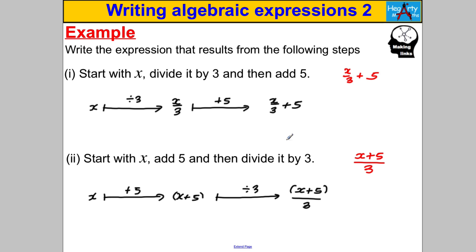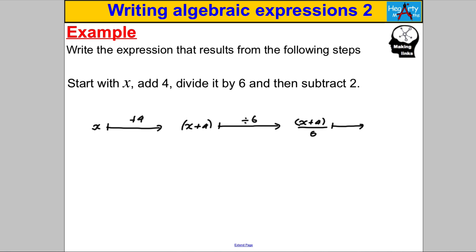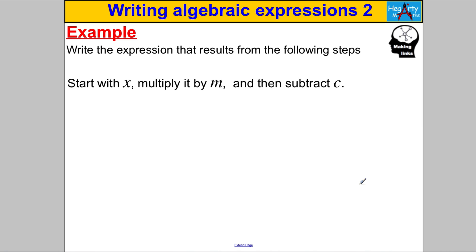Let's try another. Start with X, add 4, divide by 6, then subtract 2. Start with X, add 4 — put a bracket around it to keep that together — divide that whole thing by 6, giving X add 4 in brackets over 6. Then subtract 2, so the answer is X add 4 over 6, subtract 2.